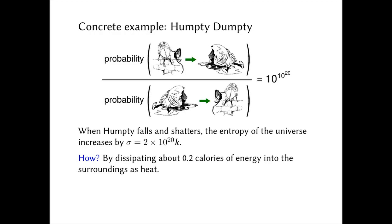This idea applies just as well to living things as to Humpties and subsystems — it's a law that applies to subsystems as well as the whole universe. How does the entropy of the universe increase when Humpty falls? It turns out that increase is just heat release — about 0.2 calories. That's not a huge amount of heat, but some amount has been released into the surroundings. When we give energy to the surroundings, the surroundings can explore more addresses and hence the entropy of the universe as a whole increases. This is how we typically pay our dues to entropy as subsystems of the universe — we dissipate heat.